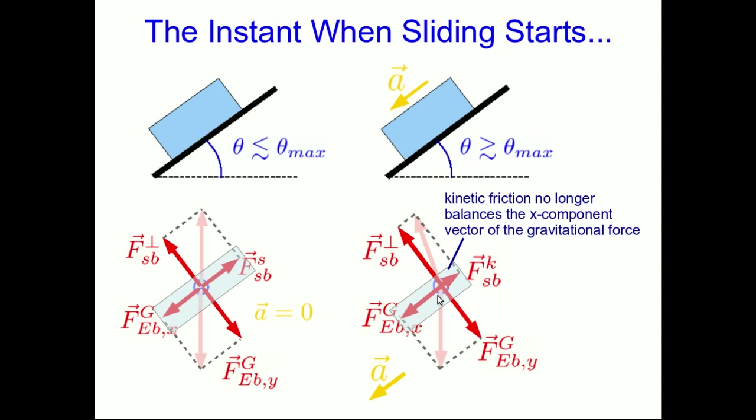But think about that carefully because we've hardly changed the angle theta at all, and so this component vector of the gravitational force has hardly changed. And yet we see an acceleration down the slope. If it had just changed and the frictional force had remained the same, we would expect to see an extremely small acceleration down the slope. But we don't.